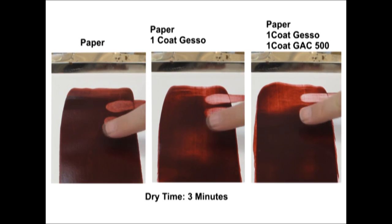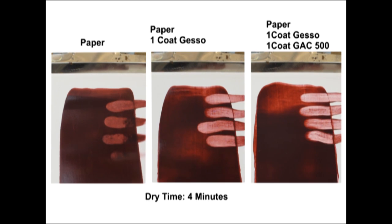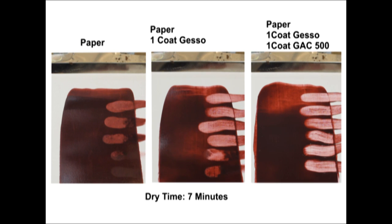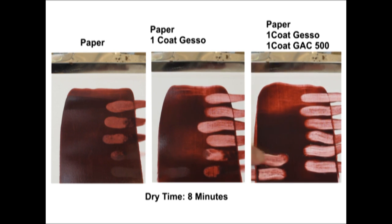We created three common surfaces with varying degrees of absorbency and applied a 3 mil thick layer of heavy body paint onto each one. Using the finger swipe test, we can see the impact of surface absorbency. The sealed paper with gesso and acrylic medium delivered three times as much working time when compared to the uncoated paper.